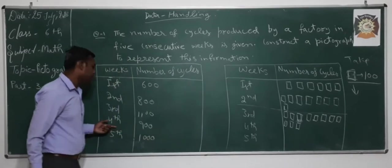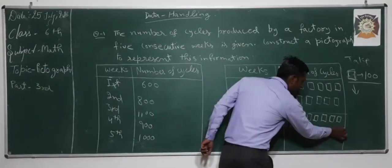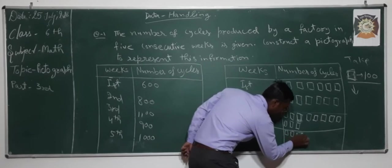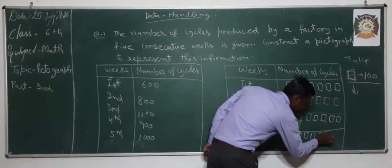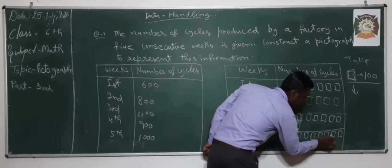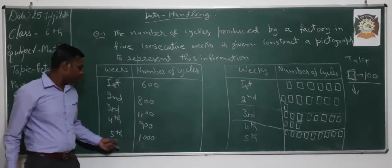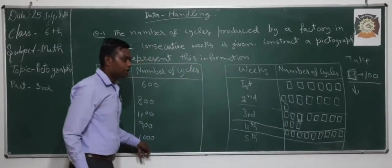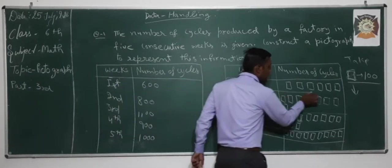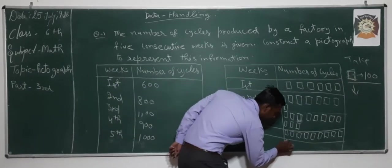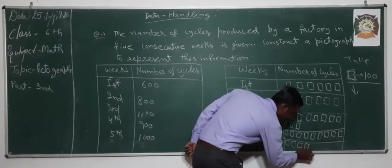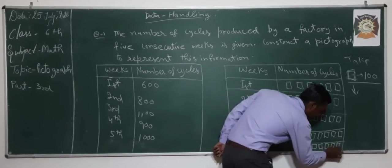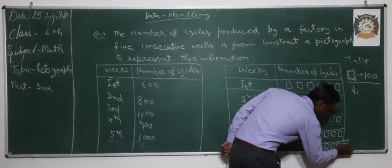For the fourth week there are 900 cycles, so we represent 9 scales. And for the fifth week we have to represent 1000, which means we write 10 scales — since 1 symbol represents 100 cycles.